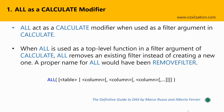Let's learn about ALL as a calculated modifier. First, ALL acts as a calculated modifier when used as a filter argument in CALCULATE. Remember, the CALCULATE function has two main parts: the expression and the filter arguments. So when we use ALL as part of the filter arguments, ALL acts as a calculated modifier. Second, when ALL is used as a top-level function in a filter argument of CALCULATE, ALL removes an existing filter instead of creating a new one. The proper name for ALL could have been REMOVEFILTERS. The syntax is covered in a separate tutorial — link will be shared.